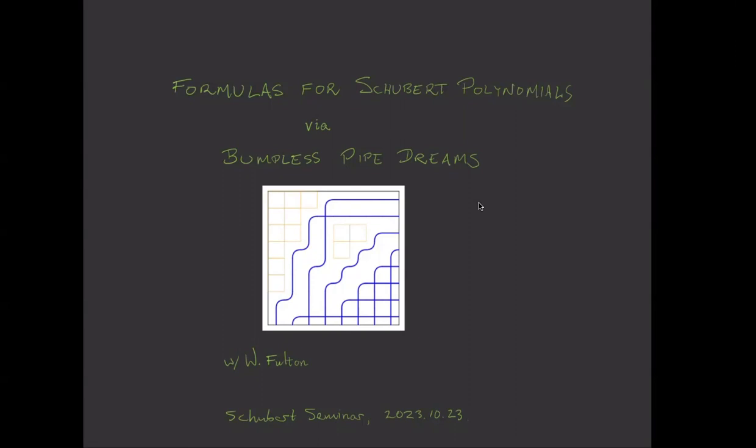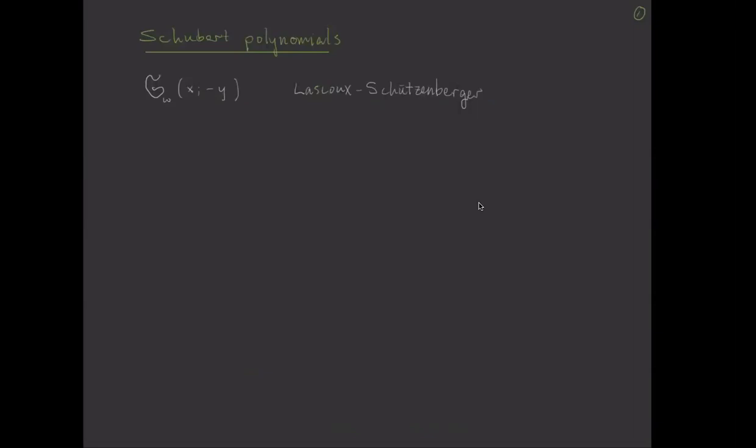So I'd like to talk about Bumpless Pipe Dreams and Schubert polynomials. I'm not going to go into all the background, assuming you already care. But let's start by saying something about what Schubert polynomials are. They were introduced in the early 80s by Lascoux and Schützenberger. The single ones were introduced in 1982 or so as representatives for the homology classes of Schubert varieties in the flag variety. Curiously enough, the double ones came along a couple of years later. If you look at their paper, there's no mention of homology at all. It's really just about interpolation. It's a little unclear when the connection to equivariant cohomology and degeneracy loci and geometry came about, but that was certainly in the 90s. And it's certainly due to a number of people here in this audience.